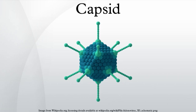A capsid is the protein shell of a virus. It consists of several oligomeric structural subunits made of protein called protomers. The observable three-dimensional morphological subunits, which may or may not correspond to individual proteins, are called capsomers.